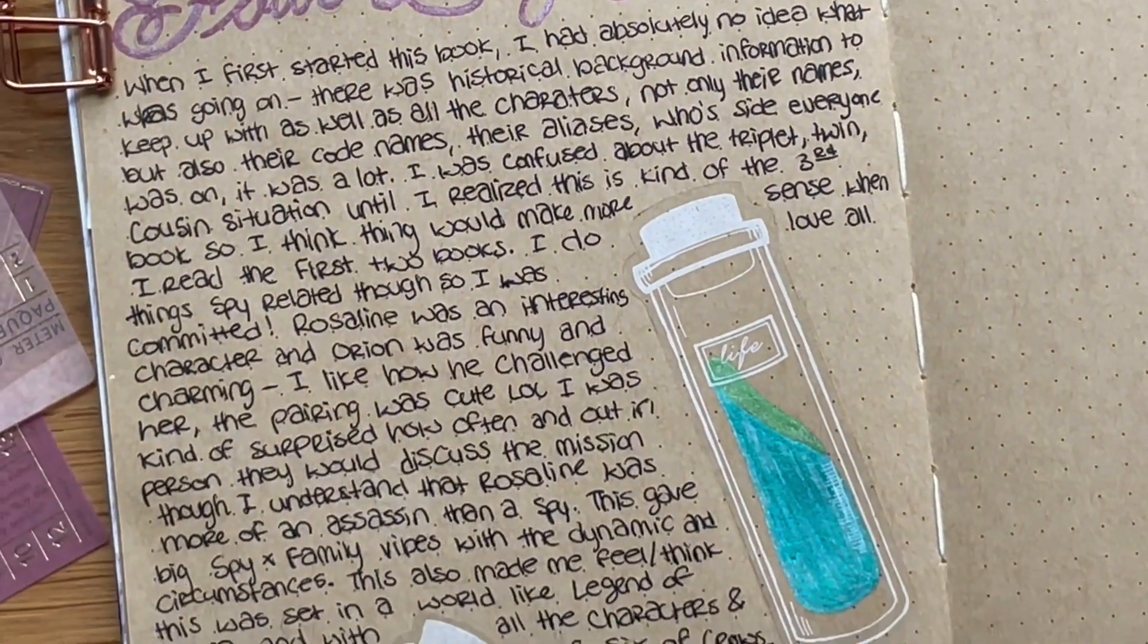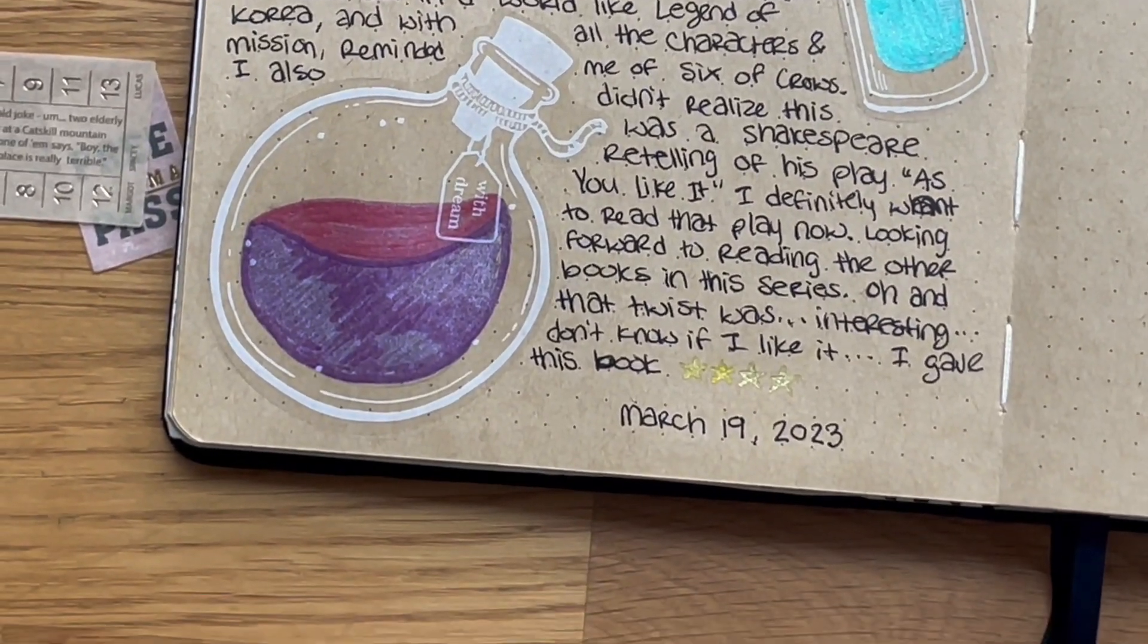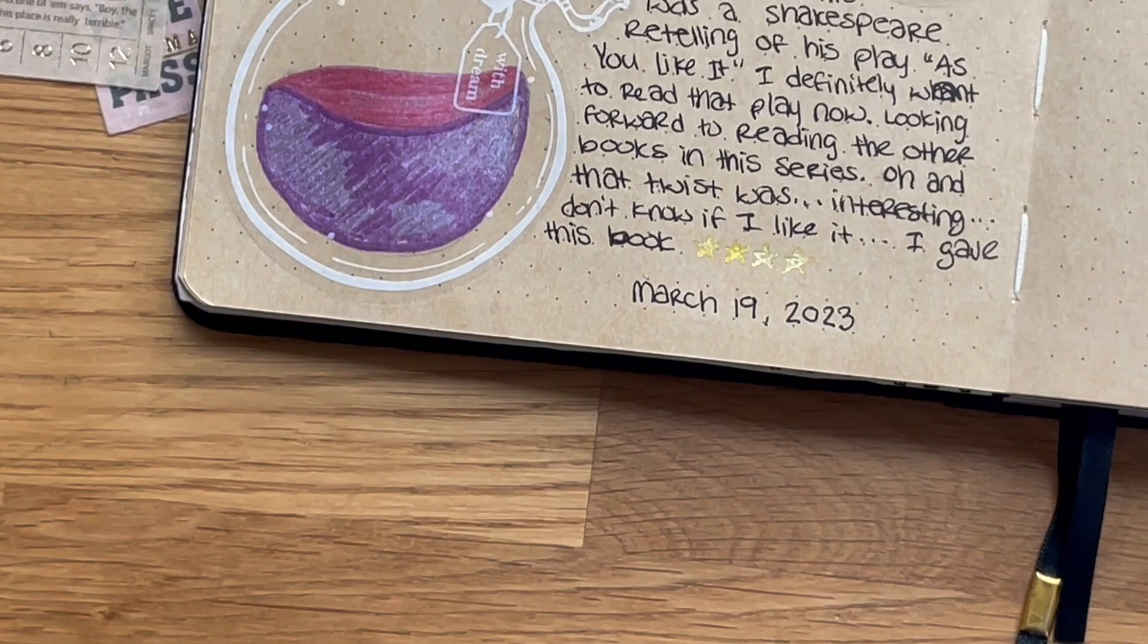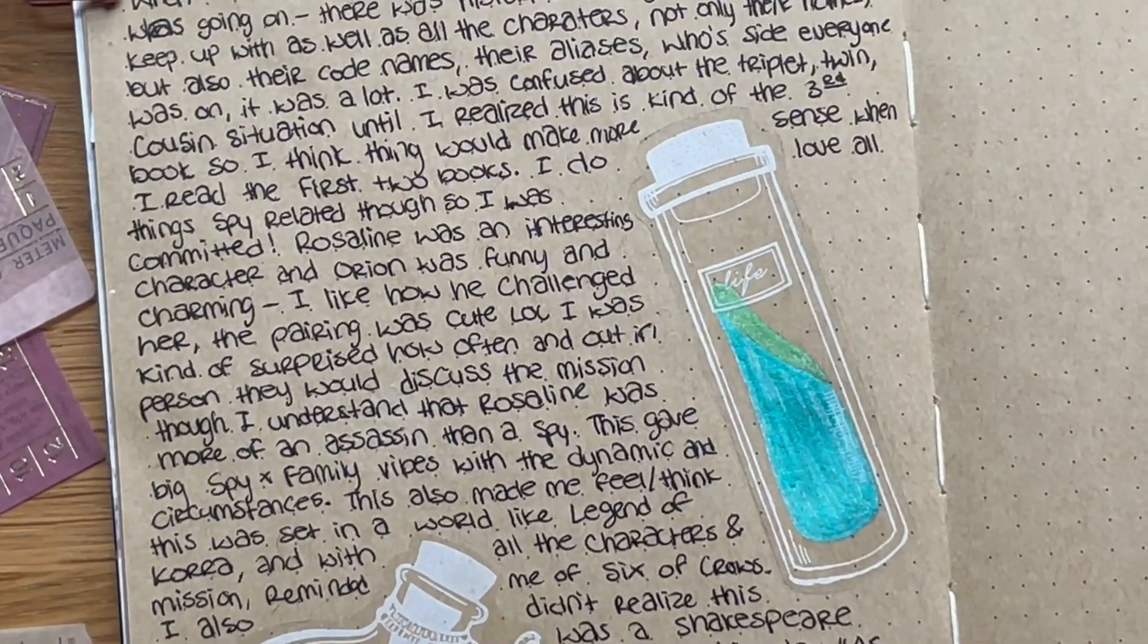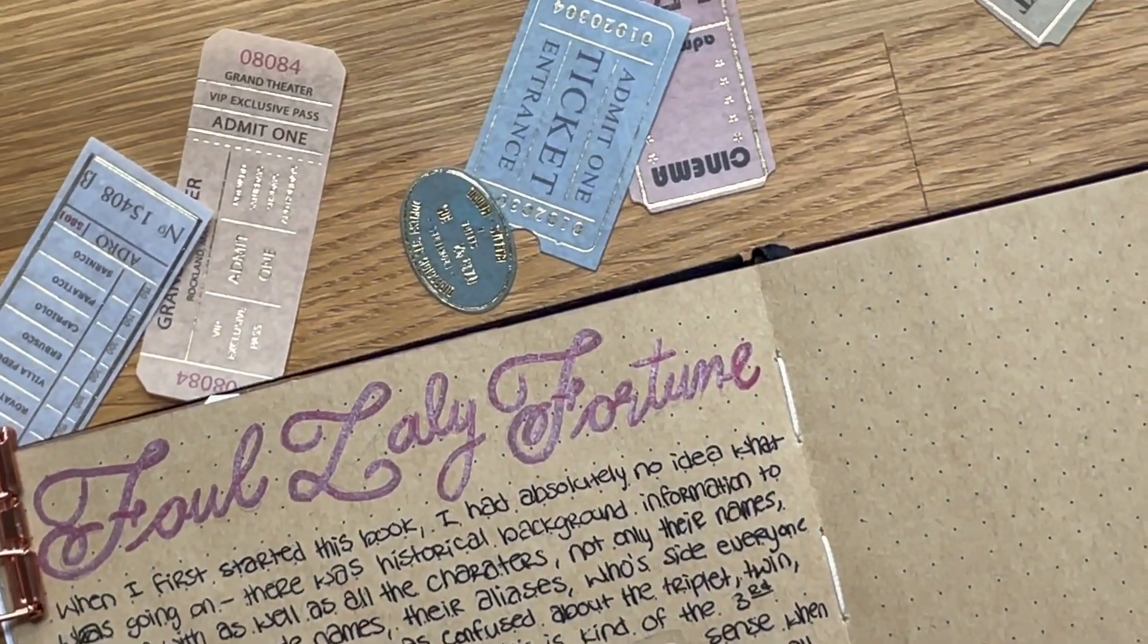For the design of this page, I wanted to include these little vials of liquid because they're kind of important to the story. Rosalyn is an assassin, and her go-to weapon of choice is poison that she actually makes herself. I also am very aware that I wrote 'Foul Lolly Lolly Fortune' - I'll fix it later. Oh my gosh.